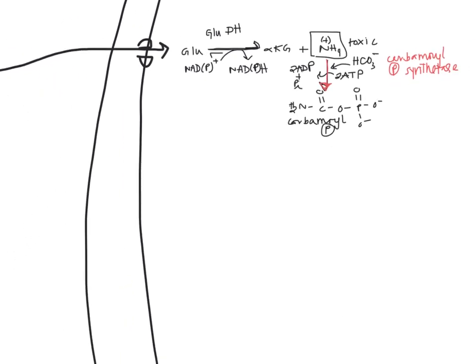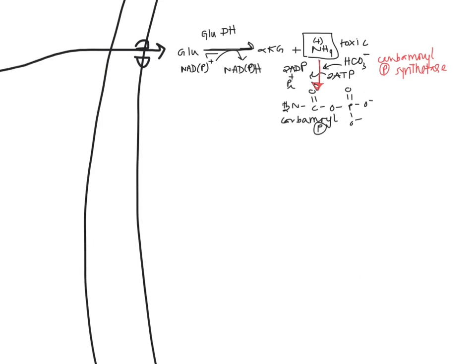A quick history note: Krebs, who discovered the TCA cycle, also discovered the urea cycle — actually before the TCA cycle. Both cycles were discovered by Krebs, and both are connected to each other. On paper, they both look like circles.